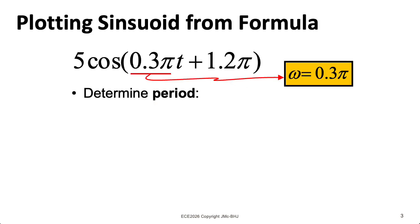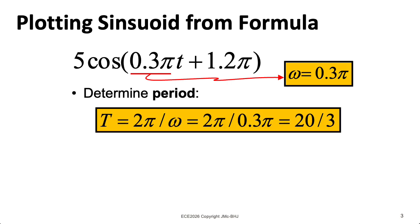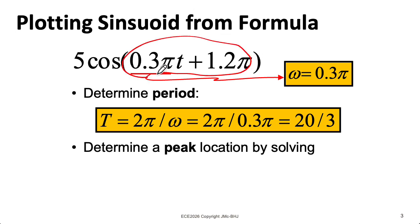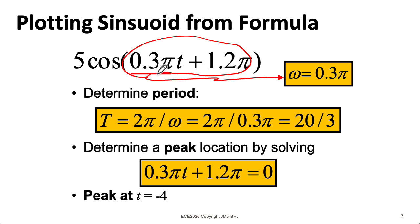Briefly reviewing the example from last time, we could plot the sinusoid by first figuring out the period. Then to figure out where one of the peaks is located, we could take the argument of the cosine and set that equal to 0. So if we do that here, we wind up with a peak at t equals minus 4.